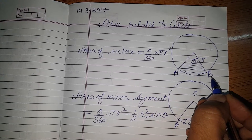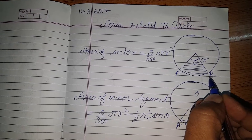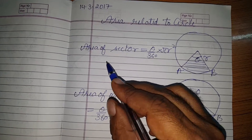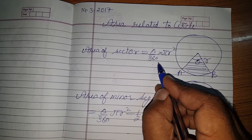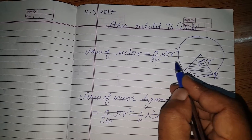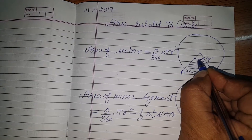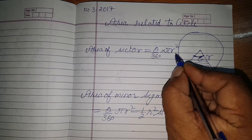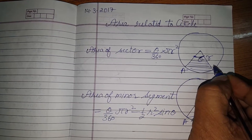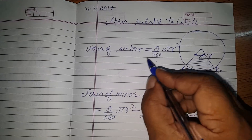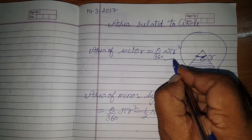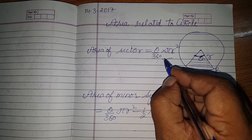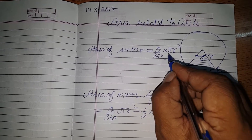First we will discuss the formulas related to circles. Area of sector is theta by 360 into pi r square. Here theta is the angle between the two radii and r means radius. If you want to find the area of a sector, you will apply this formula. Learn this formula: theta by 360 multiplied by pi r square.